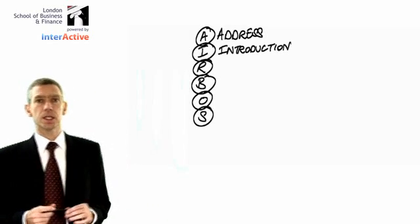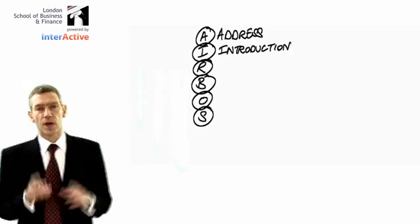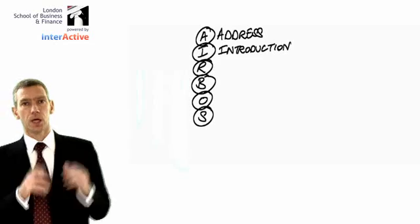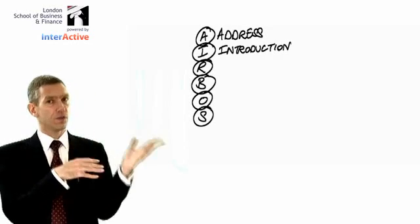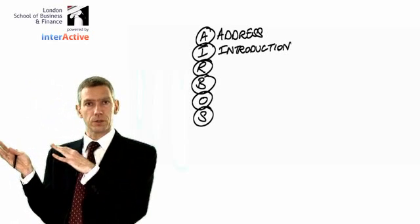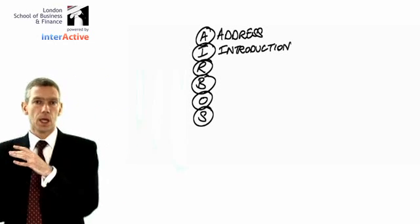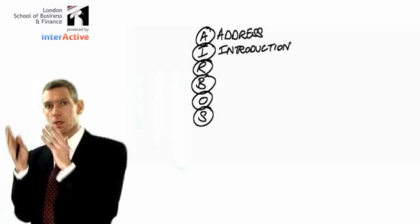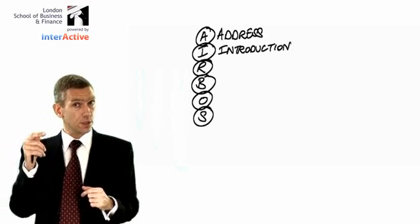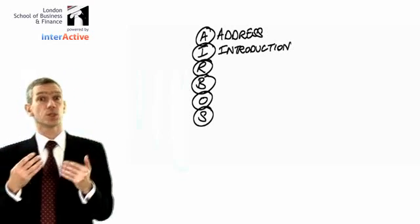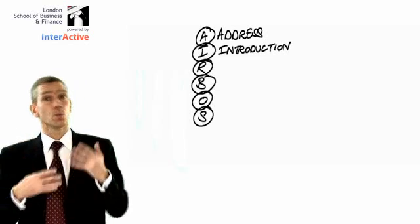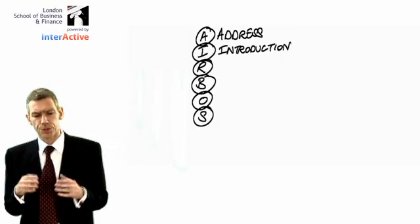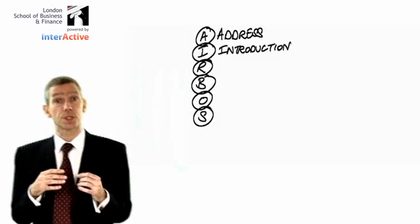The introduction sounds an easy idea, doesn't it? But it's not all that easy. Financial statements are contained in a document known as the annual report. And roughly half of the annual report is the financial statements, and the other half is what's called the management commentary. We as auditors only audit the financial statements — we don't audit the commentary. So in our introduction, we say: we have audited the financial statements from pages 101 to 205. The introduction specifically identifies the fact that we've only audited the financial statements.